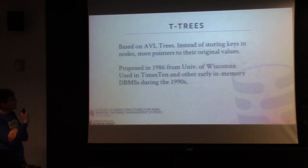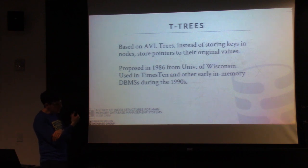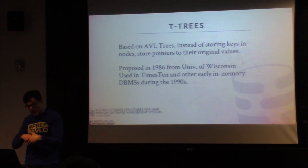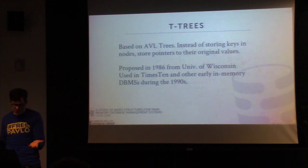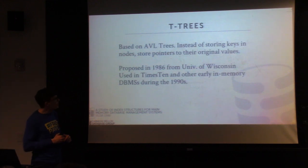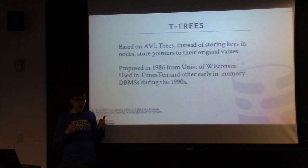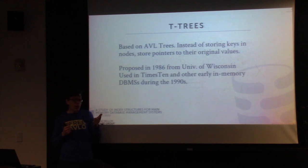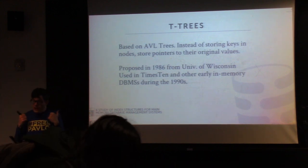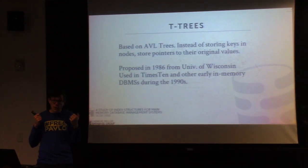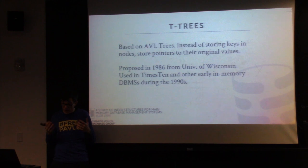T-trees are an interesting topic because I like the history of databases. It's crazy to think that 1986 was 30 years ago — most of you weren't even born. T-trees were the first data structure developed for in-memory databases, in the 1980s. The first ideas about how to build an in-memory database came from early research by Dave DeWitt and some of his students at the University of Wisconsin in the early 1980s. Back then, the capacity of DRAM was quite limited, so people didn't think you could actually build and run these in production — you simply did not have enough DRAM.